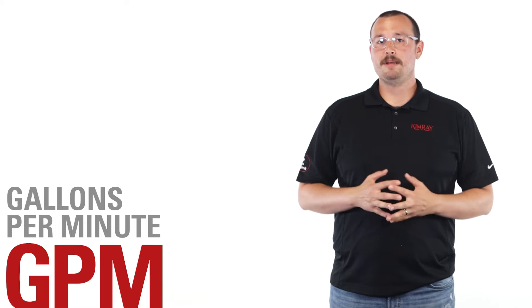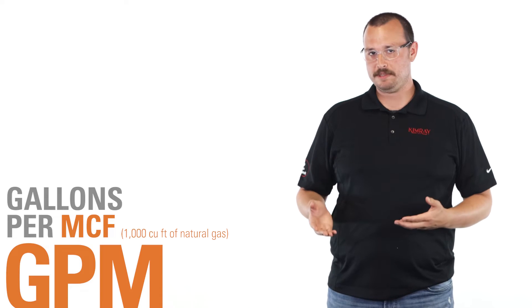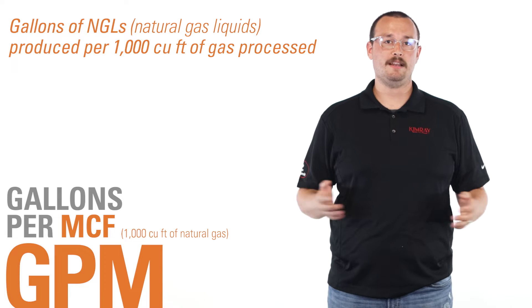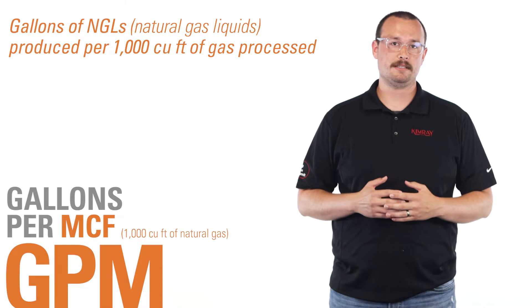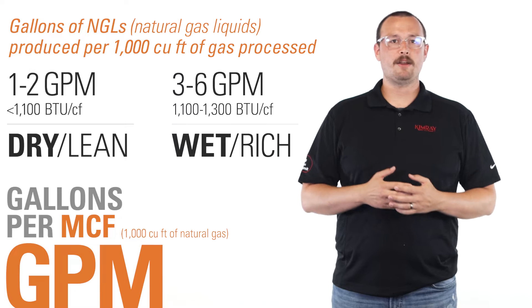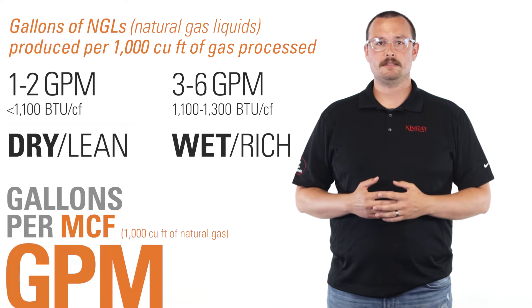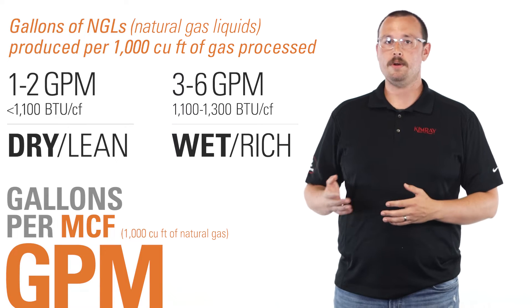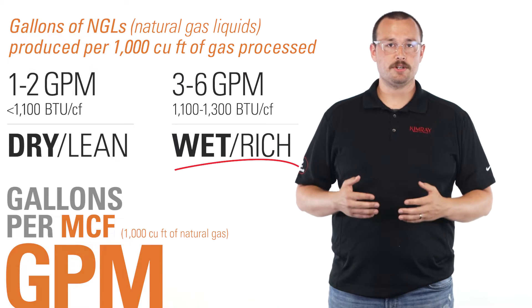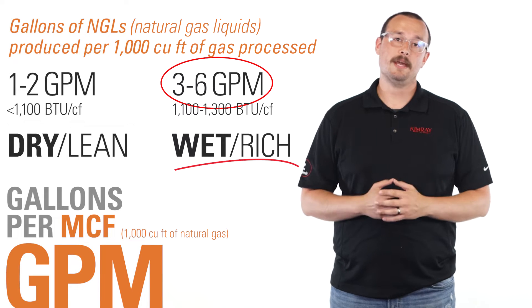However, the acronym GPM is also a measurement for natural gas, meaning gallons per MCF, or gallons of NGLs produced per thousand cubic feet of gas processed. It is a means for measuring the difference between lean and rich gas, as measured by the BTU of the gas and its GPM. The richer your gas, the more gallons you get.